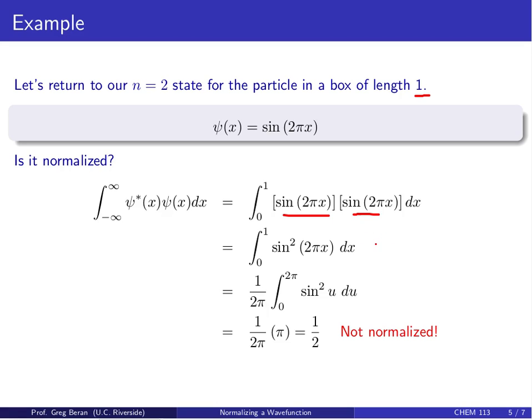Now we go ahead and do this integral, multiply these together, do our change of variables, and use a table of integrals to solve. In the end, you should find that this integral equals 1/2, as I said a couple of slides ago. In other words, this wave function is not normalized because the sum of the probabilities does not equal 1.